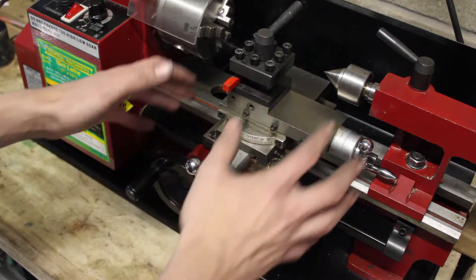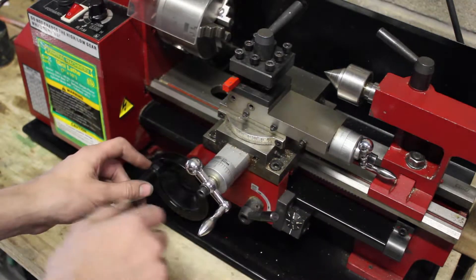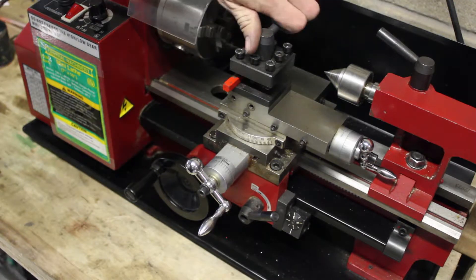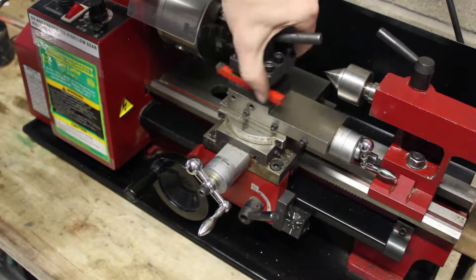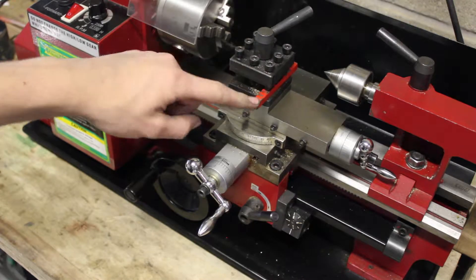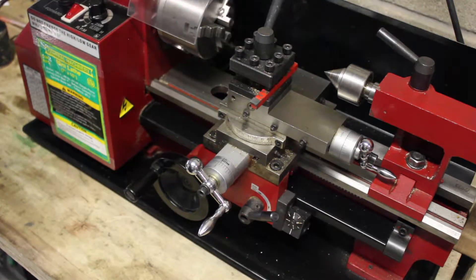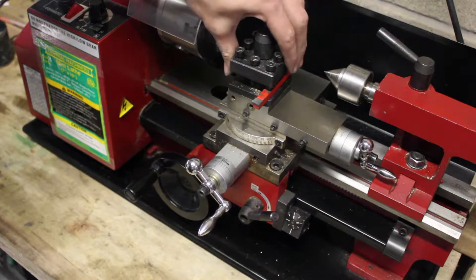Anyway, the knobs are used for moving the carriage around. And on top of the carriage, we have our tool post here. And the tool post is what carries the tool. The tool is very important for lathing. This is what cuts the material as your chuck spins.